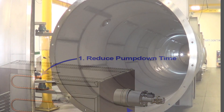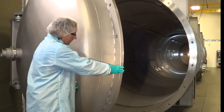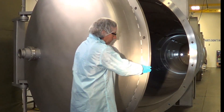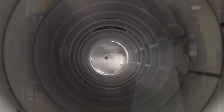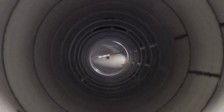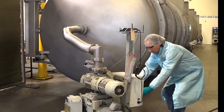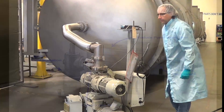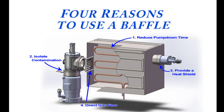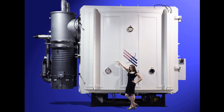For most systems, water vapor comprises between sixty to ninety-five percent of the residual gas load. By creating a cold surface, the partial pressure of water vapor is lowered, thus significantly reducing the required pumping capacity and reducing evacuation time.